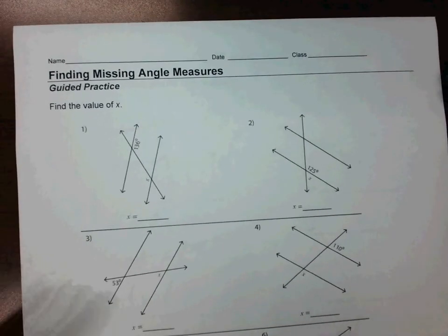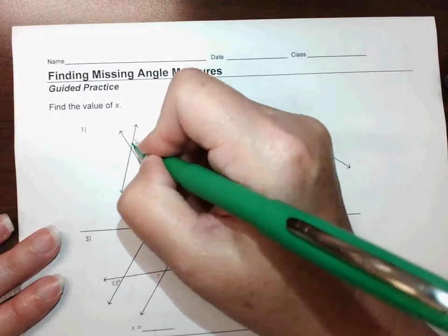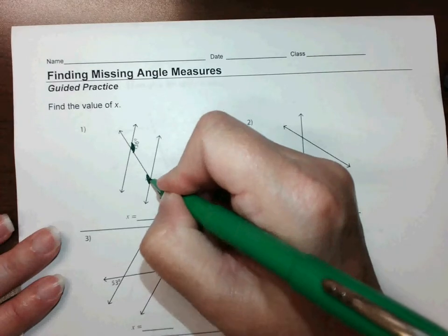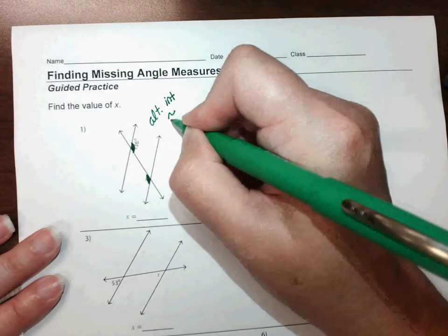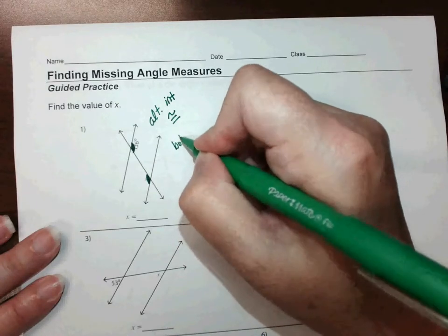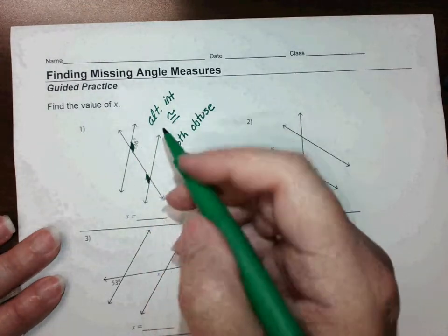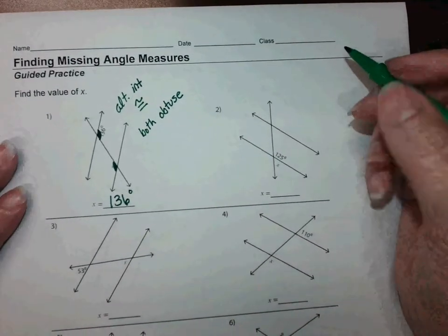For this lesson we are finding missing angle measures. They've given us this angle right here — 136 — and they're asking for the value of x. I see that these are alternate interior angles, and I know that those are congruent. They're both obtuse, so if this one's 136, so is this one.